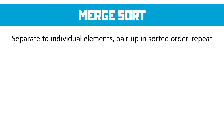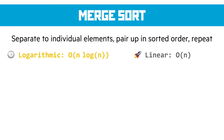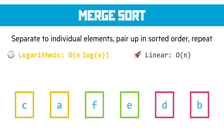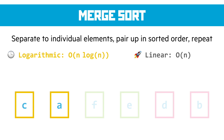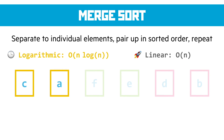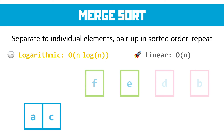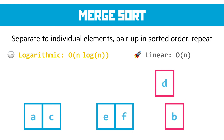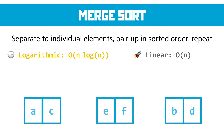Merge sort separates everything into individual elements, pairs them up, sorts each pair, and repeats. It has logarithmic time complexity because it's a divide-and-conquer algorithm, and linear space complexity. We split the data so each element is its own sorted list, then pair them. For C and A: A comes first, then C — sorted pair. For F and E: E first, then F — sorted pair. For D and B: B first, then D — sorted pair. Now we pair up those pairs.